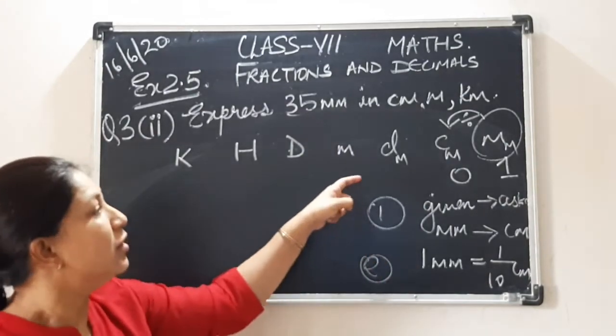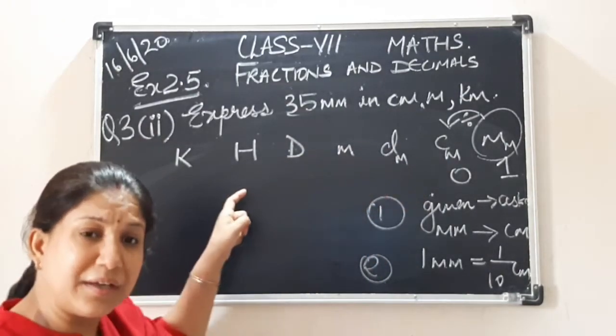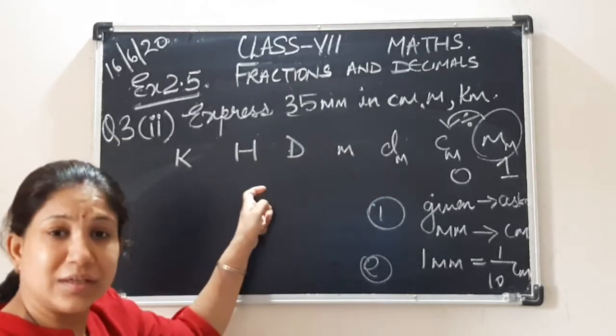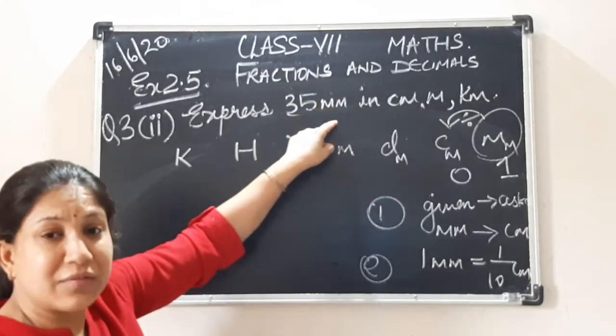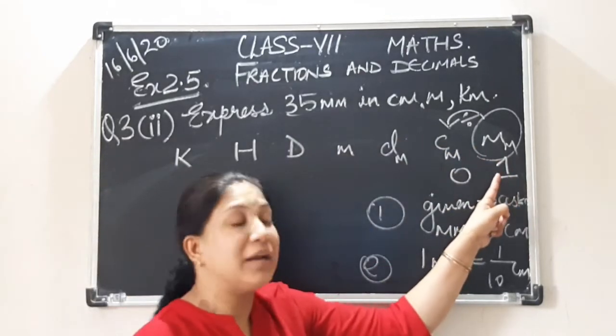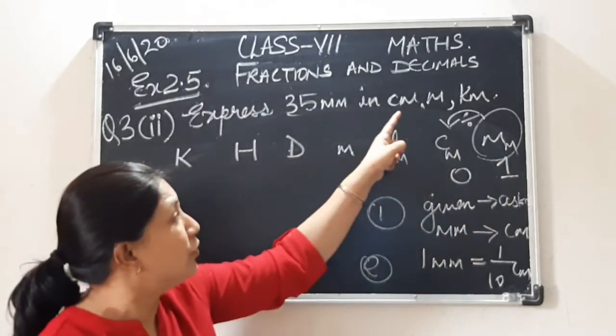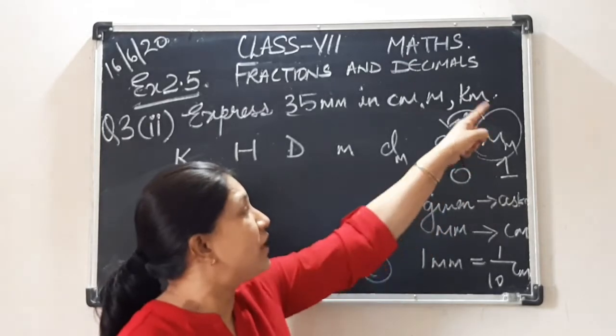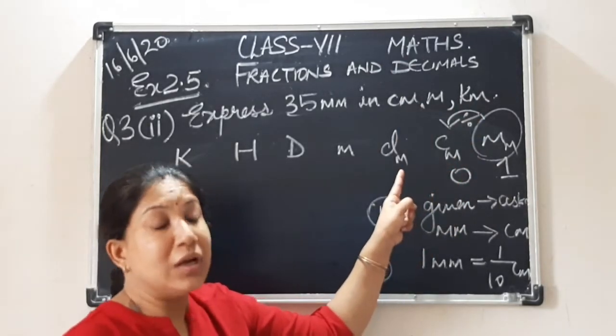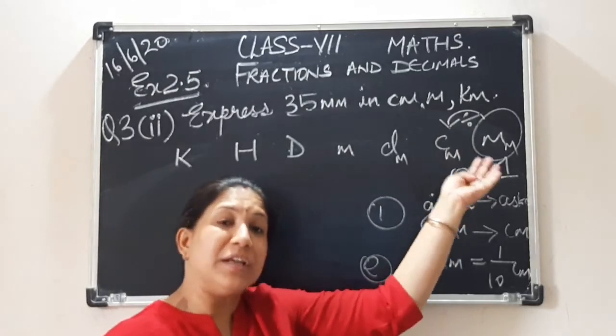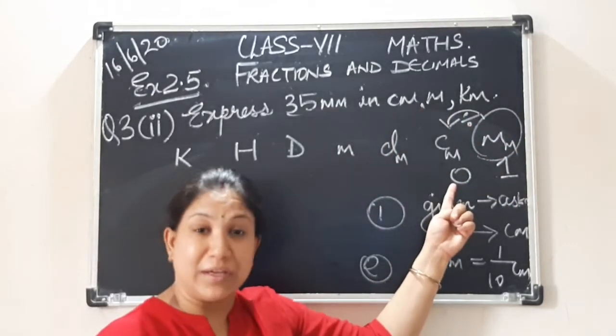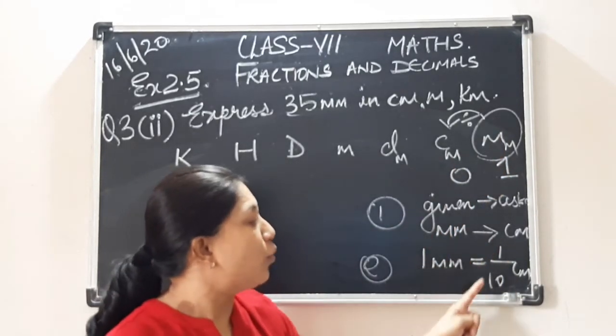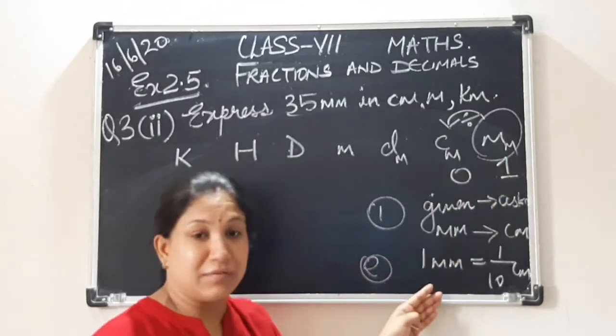I am explaining you again. You write down the sentence, initial letters. Then, what is given? In which unit it is given? You encircle that unit and mark it as 1. And in which unit it is asked, you locate that unit. After that, you mark if there are two jumps, there will be two zeros. Now jumps also you have to see. If it is in backward direction, it will be divided. That is why 1 millimeter is 1 by 10 centimeters because we are dividing. Correct?